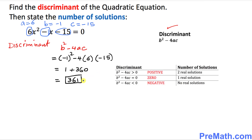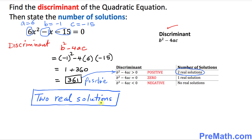The discriminant value turns out to be 361, which is a positive value. When the discriminant is positive, the number of solutions we get is two real solutions. So our answer is two real solutions.